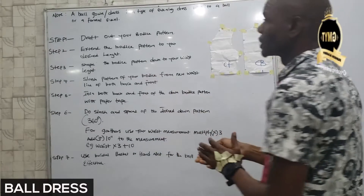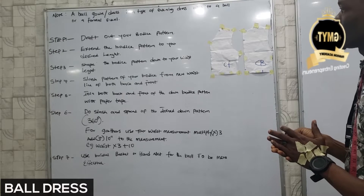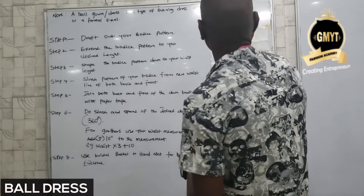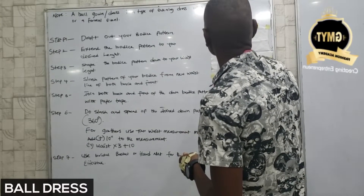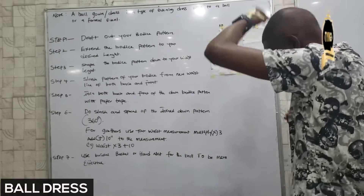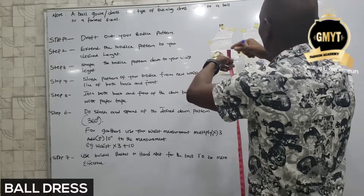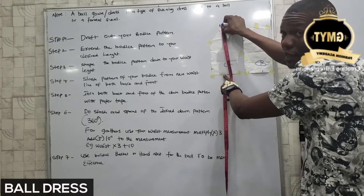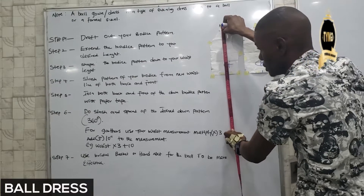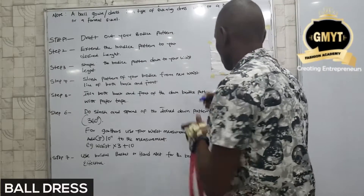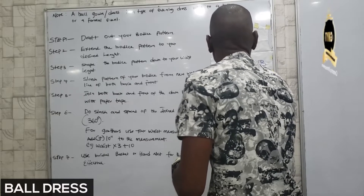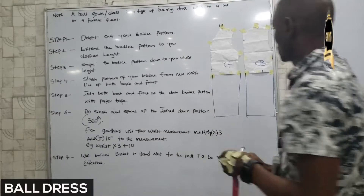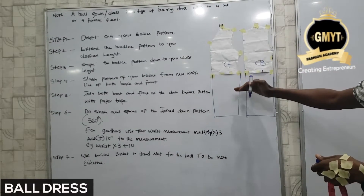Now step two. Extend the body pattern to your desired length. Now to your desired length, you are starting from your MP. Your front MP is always good to start all your measurements from. You are picking the measurement from your MP down to your desired length — how long you want the ball dress to be. Now you are going below the waistline. Let's say this is our desired length of both back and front.